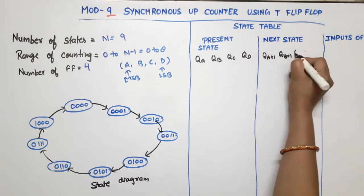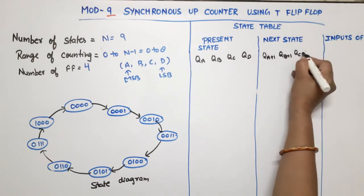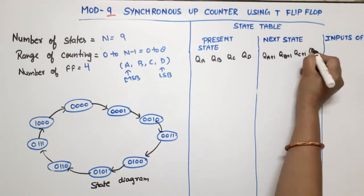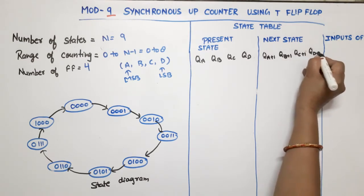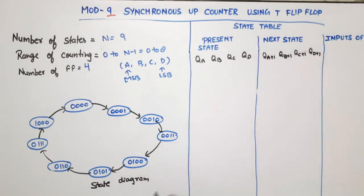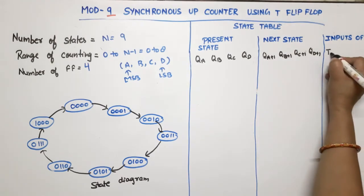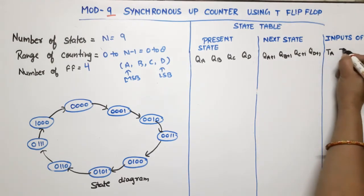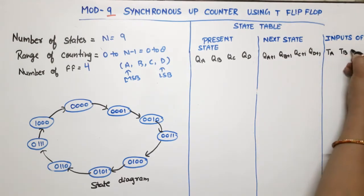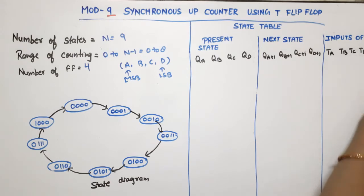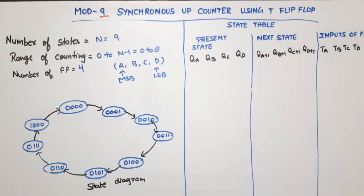The T inputs for our four flip-flops are T_A, T_B, T_C, and T_D. We will use all four flip-flops.